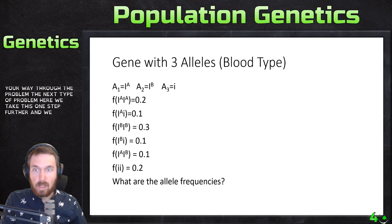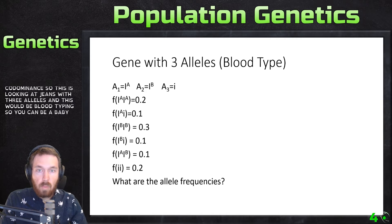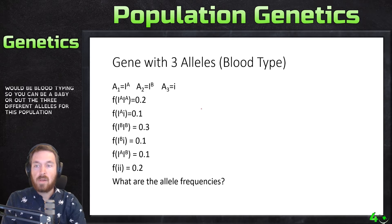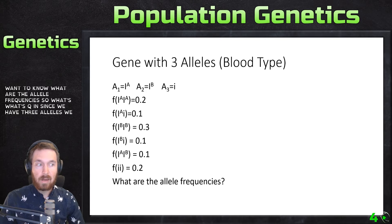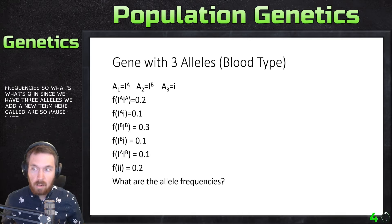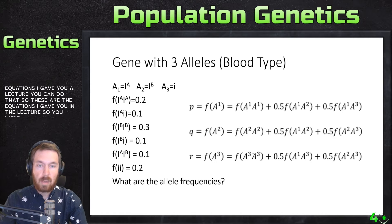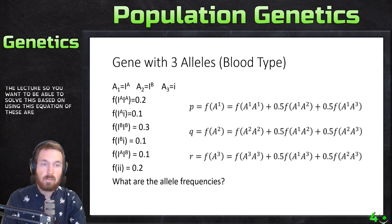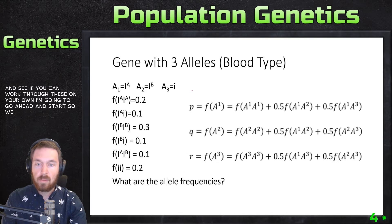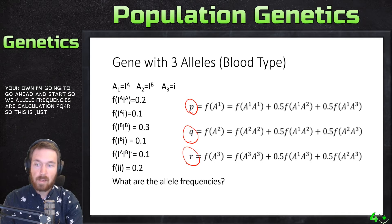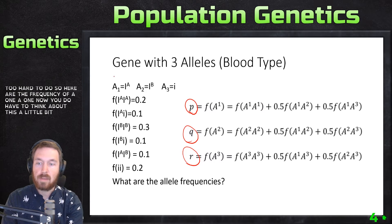The next problem takes this one step further, looking at codominance — specifically blood typing, which has three alleles: A, B, and O. I gave you some information and want to know the allele frequencies p, q, and a new term r for the third allele. Pause here and try to work through this using the equations from lecture. These are the reduced equations to make it simpler.